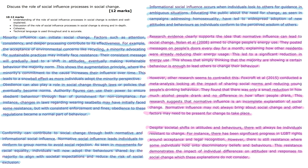The answer provided presents a thorough discussion of the role of social influence processes in social change, addressing both the description (AO1) and evaluation (AO3) aspects of the question. In the description section, the response breaks down the various mechanisms through which social influence can drive social change — discussing minority influence, obedience, and conformity, providing clear definitions and examples for each. For instance, the example of minority influence in advocating for sustainable practices effectively illustrates how consistency and commitment can gradually shift societal norms. Similarly, the mention of obedience in the context of seatbelt laws demonstrates how authority figures can enforce behavioural change through fear of punishment.